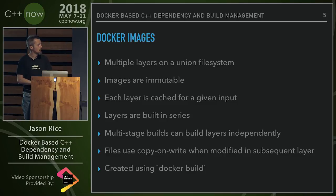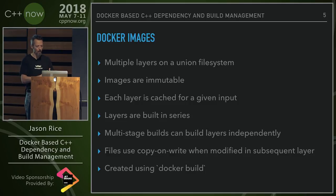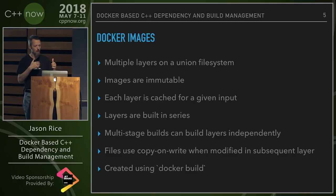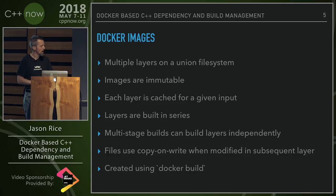Layers are built in a series. With a multi-stage build process, you can build stages independently, and then a stage can copy files from one or all of the other previous build stages, becoming dependent on whatever they copy. The file system uses a copy-on-write strategy — in a subsequent build stage, if you modify a file, that's when it gets copied over. Each layer only has differences in the file system, so if you just change one file, the only overhead is the size of that file. Docker images are created using the command line tool `docker build`.